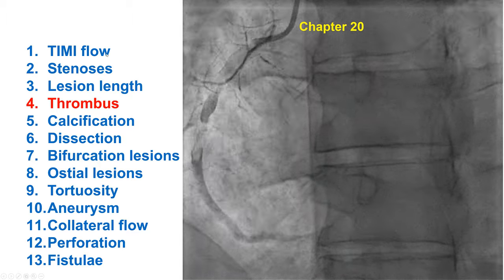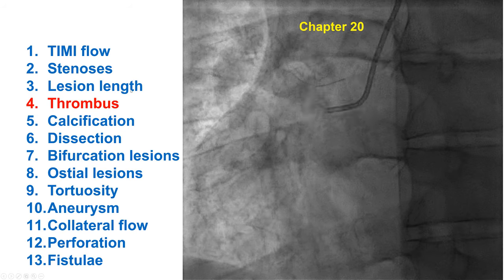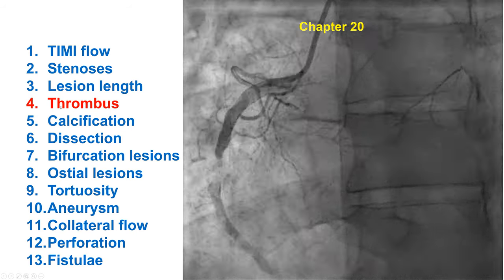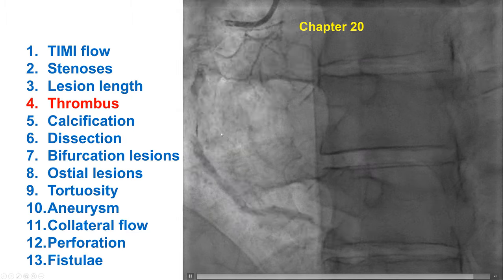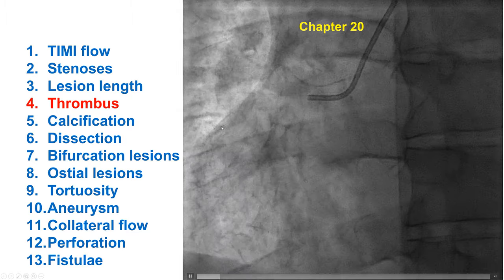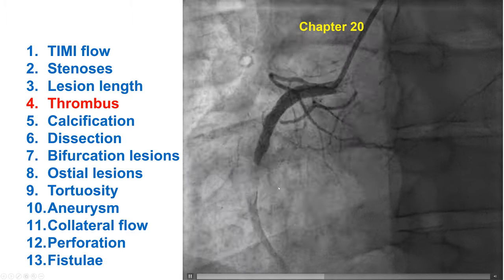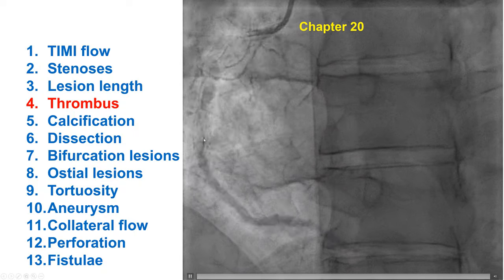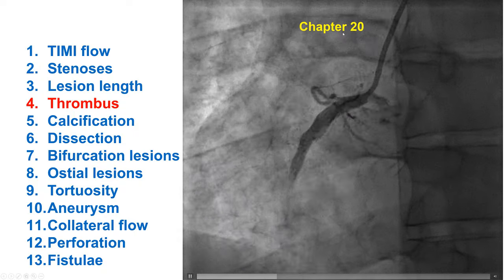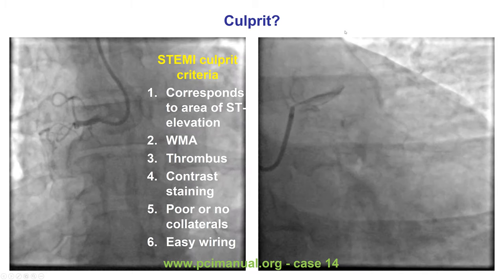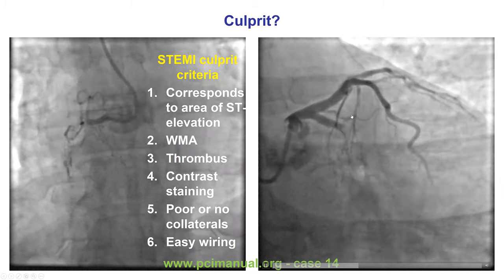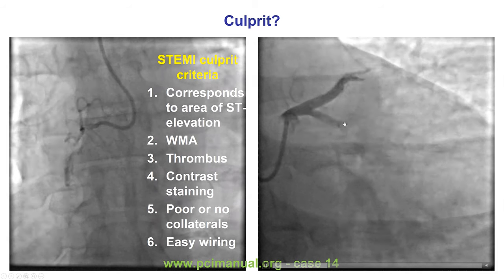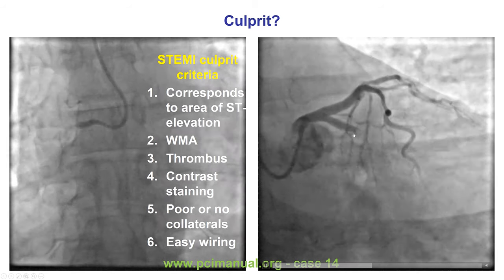After assessing TIMI flow, stenosis, and estimated lesion length in millimeters, the next characteristic to look for is thrombus. Normally, there should be no filling defects within a coronary artery. This is an example of thrombus as a round filling defect, discussed in more detail in chapter 20. This is another example of a round filling defect in a patient with acute myocardial infarction, also representing thrombus.